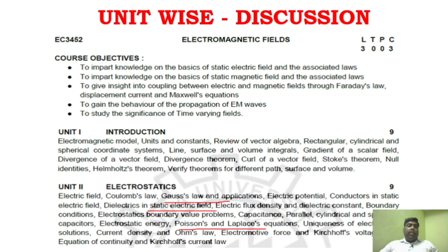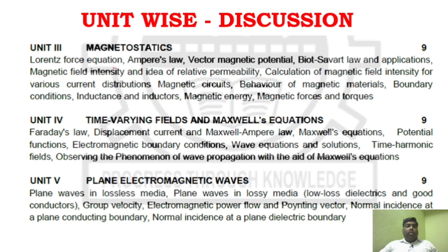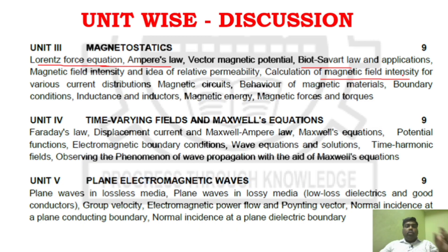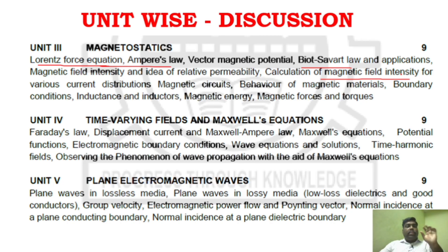Unit 3 has a lot of important areas. That is Ampere's law, Lorentz force equation, and Biot-Savart law — all those are very important. The key topic to calculate is magnetic field intensity — both using Ampere's law and Biot-Savart law. Magnetic field intensity derivation is a very important question in this unit.